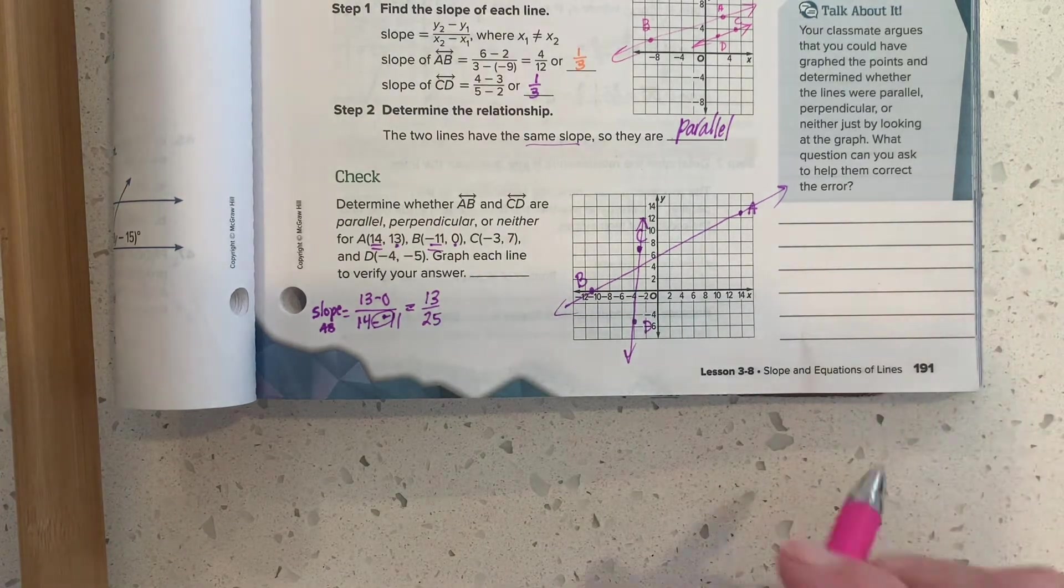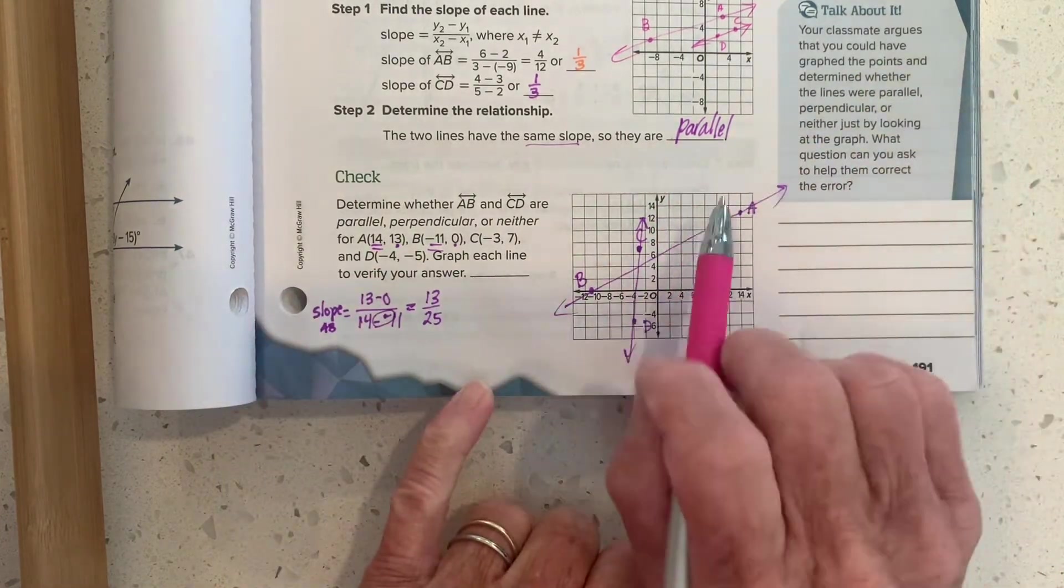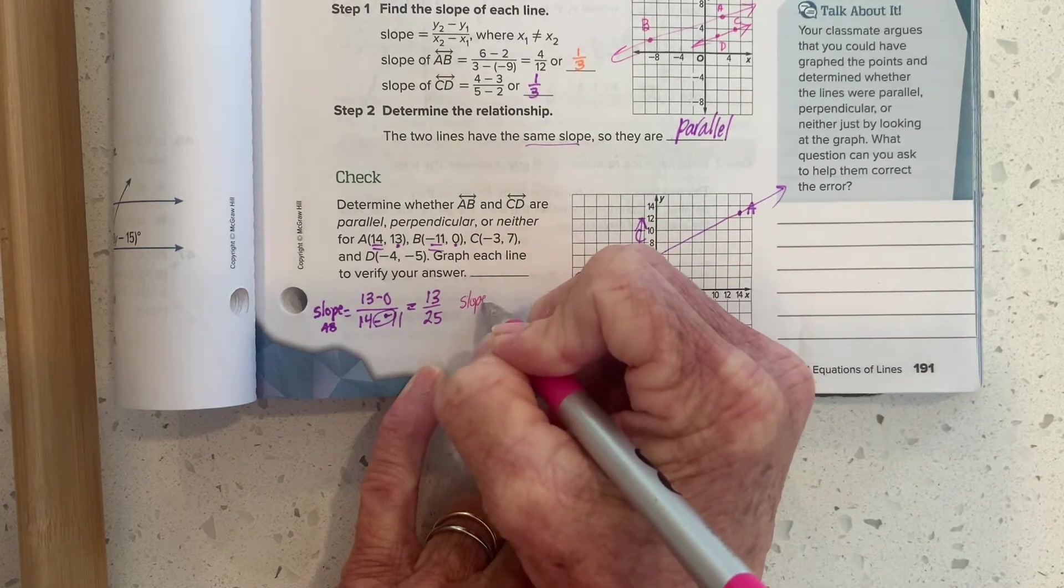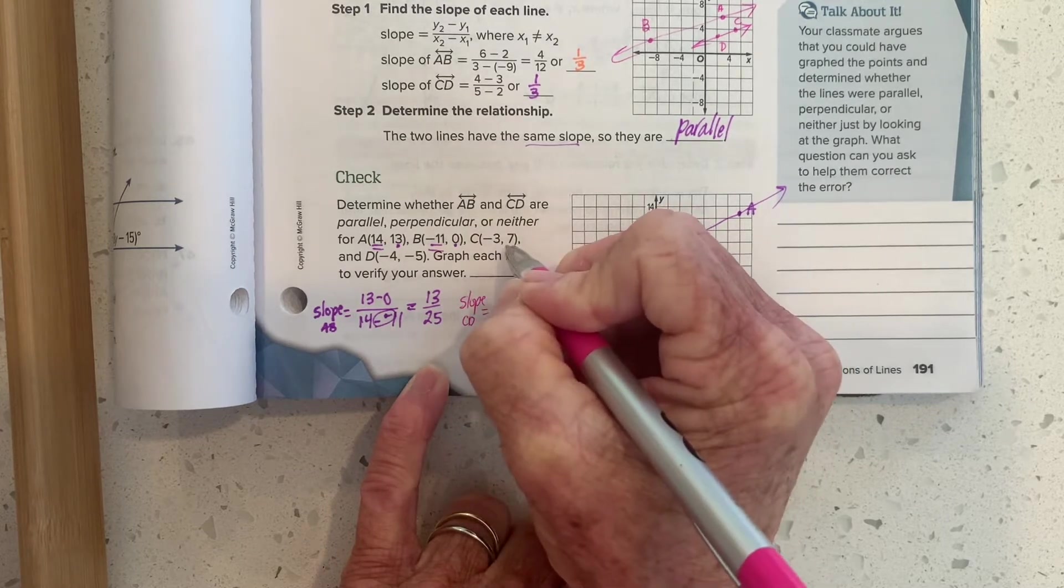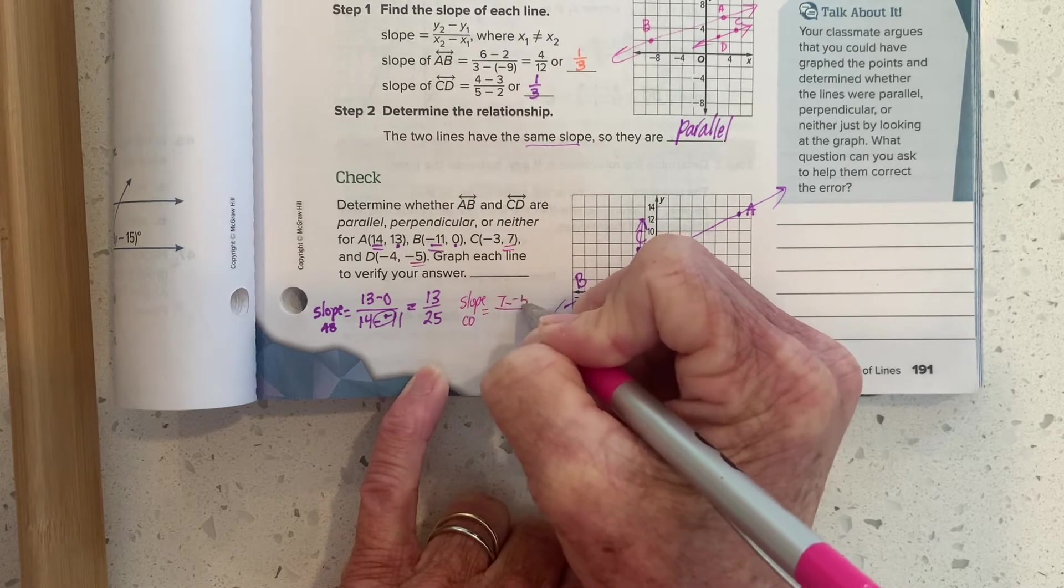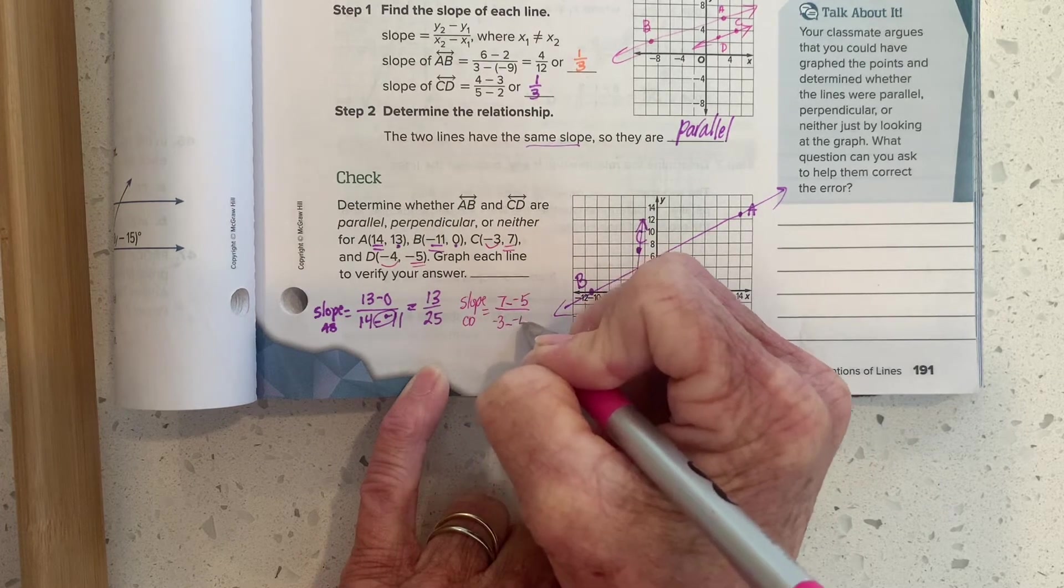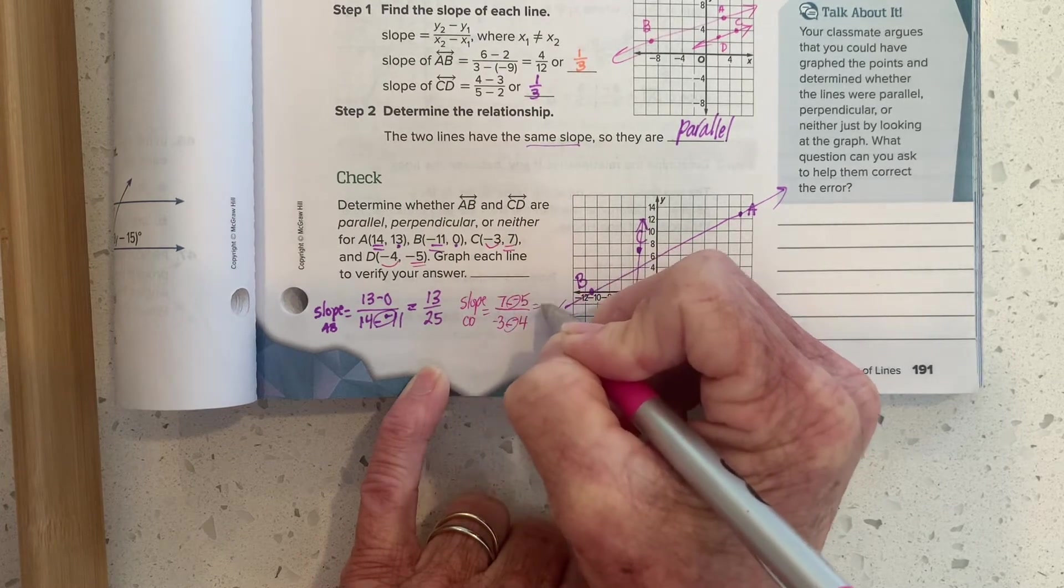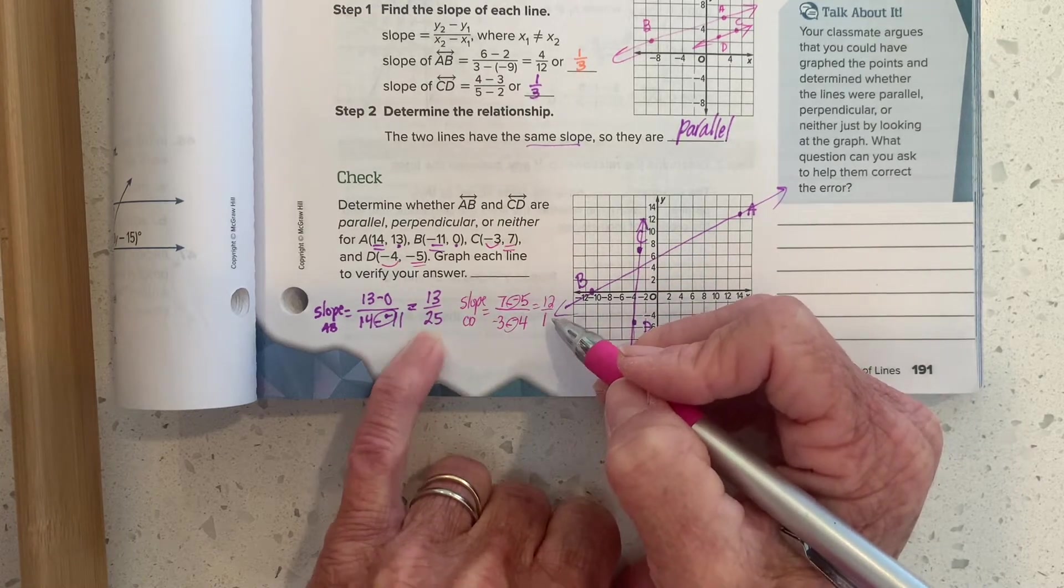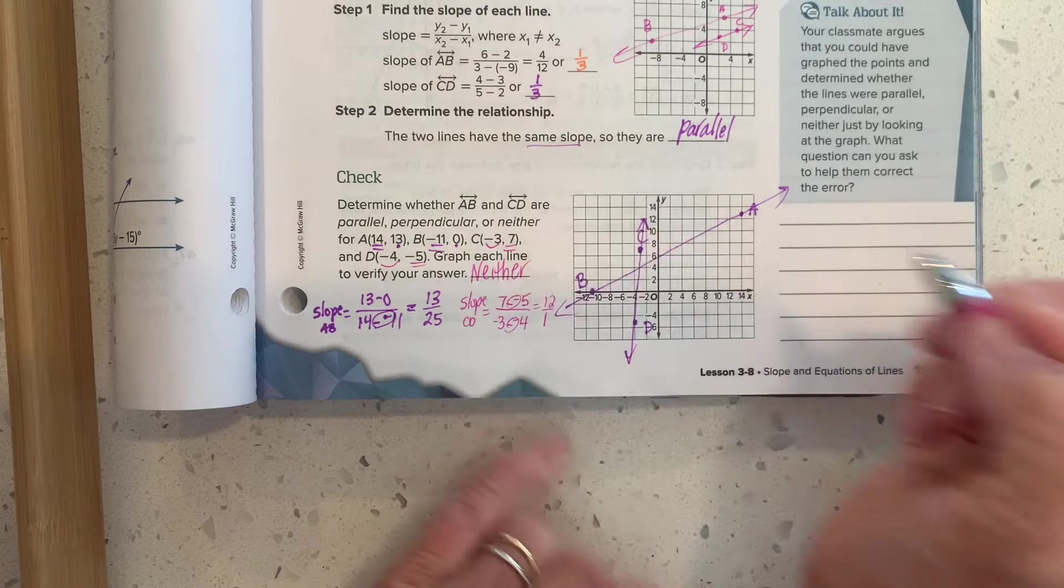For CD, and by the way, that makes sense that it's positive because that line was leaning to the right. CD is also going to have a positive slope. So that should tell you something. But in order to find the slope of CD, we'll do this Y minus that Y, 7 minus negative 5 over X minus X, negative 3 minus negative 4. Both become addition. We end up with 12 over 1. Those slopes are not the same, and they certainly aren't opposite reciprocals either. So this one's going to be neither.